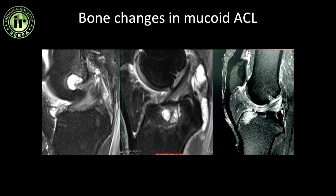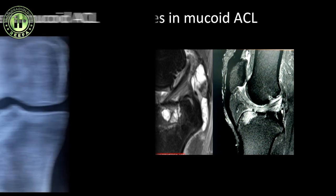Instead it results in bone marrow edema changes — the bone gives a reaction to it. So if you see a mucoid degenerated ACL with bone marrow edema at the tibial or femoral attachment, please keep in mind that this can happen with mucoid degeneration before labeling it as some other pathology.